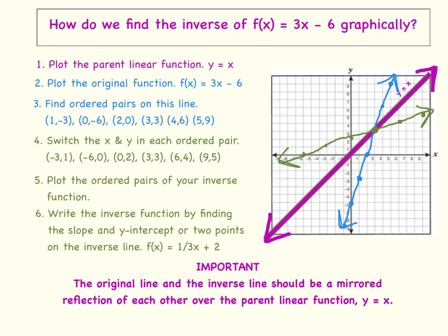First, we will plot the points for our parent linear function, which is f of x equals x. Now, we are used to saying y equals x. That is the equation form. So first, you will plot the points, which I did over here on the right in purple. And then after you plot the points, you can draw the line. So this is our parent linear function, f of x equals x, or as we say as an equation, y equals x.